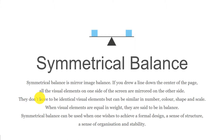The first type of balance is symmetrical balance. Symmetrical balance is the mirror image balance — if you divide your image into two sections, one side is probably equal to the other side. All the visual elements showing on one side of your screen are similar to the other side. They don't have to be identical, but can be similar in number, color, shape, and scale. When visual elements are equal in the image, they are said to be in balance.